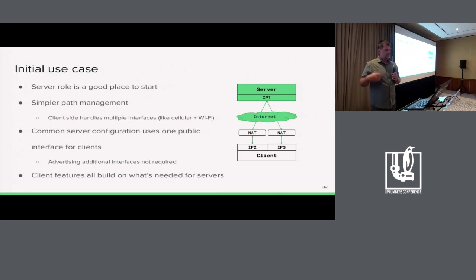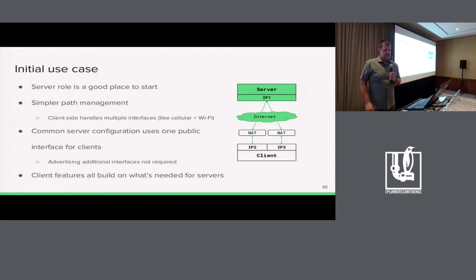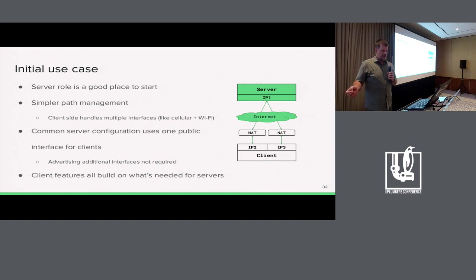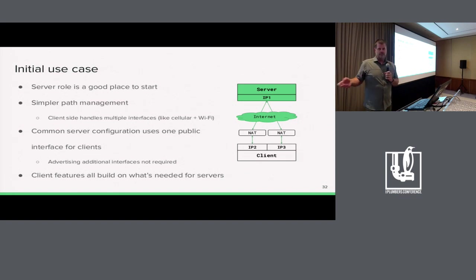In deciding what we want to support first, we looked at the asymmetry between supporting the server side of an MPTCP connection versus a device like a smartphone. What you need to make the server side work is pretty much a subset of what you need on the client side. On the client, you have multiple interfaces and need to make harder decisions about where to send something and when to open a new TCP subflow. Since we have to implement all the server stuff first anyway, it makes sense to upstream that smaller set of code, get it reviewed, get it in use, and go from there.